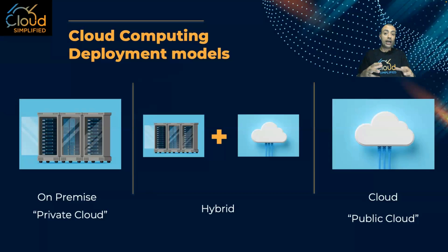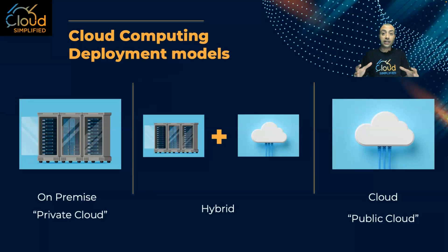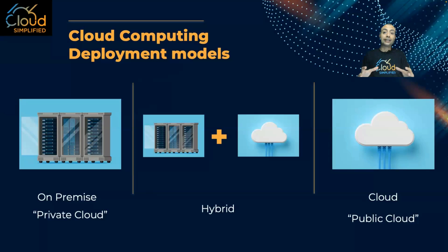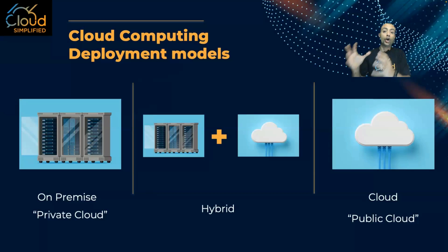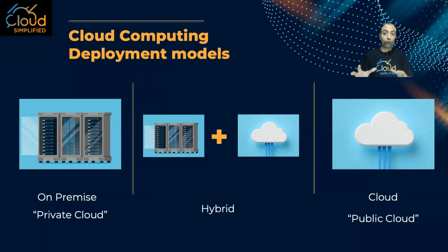Another scenario: maybe you have some organizations that have been born on the cloud, which means they started already from the cloud — they started from scratch on the cloud and they didn't have a physical data center. Famous organizations like Netflix, like Airbnb, like Uber — these organizations started born on the cloud with a public cloud deployment model.